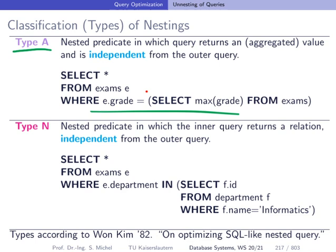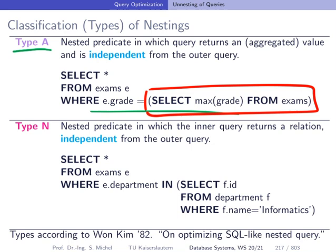We see that the subquery here is independent from the outer query, so we could just execute it once. Say this gives us the result 5.0 — the database system can now go through all the exams in the table and select those with a grade equal to 5.0. It's not very difficult to unnest, and importantly, the subquery is independent from the outer query.